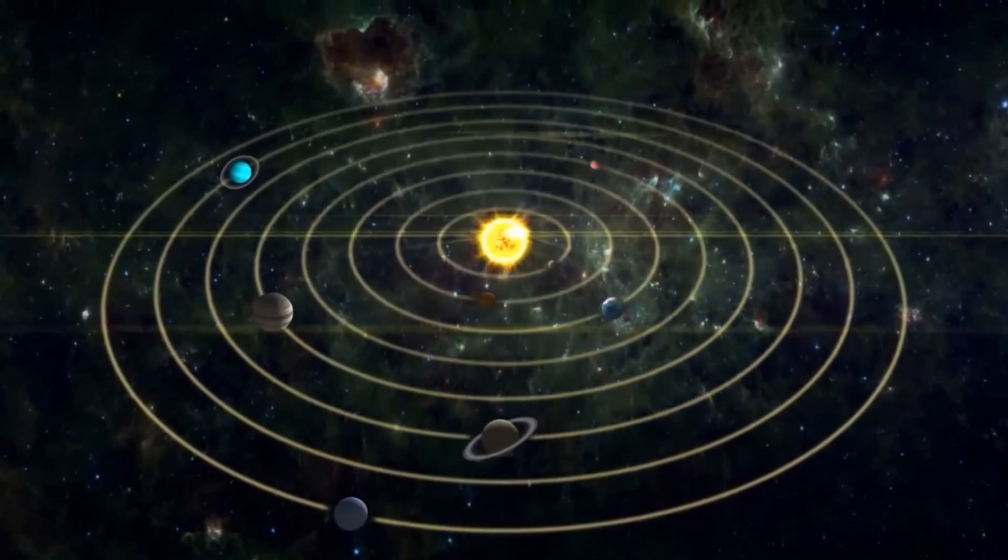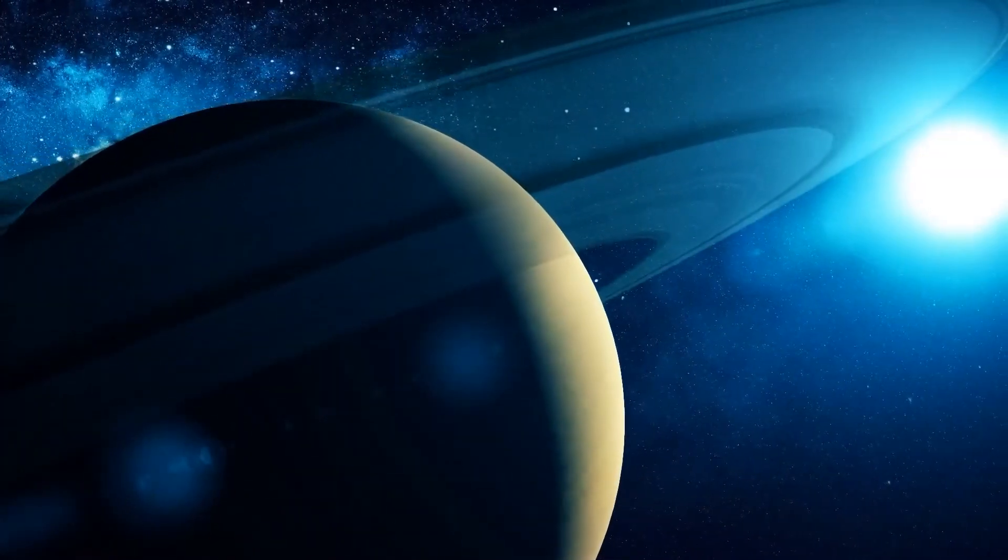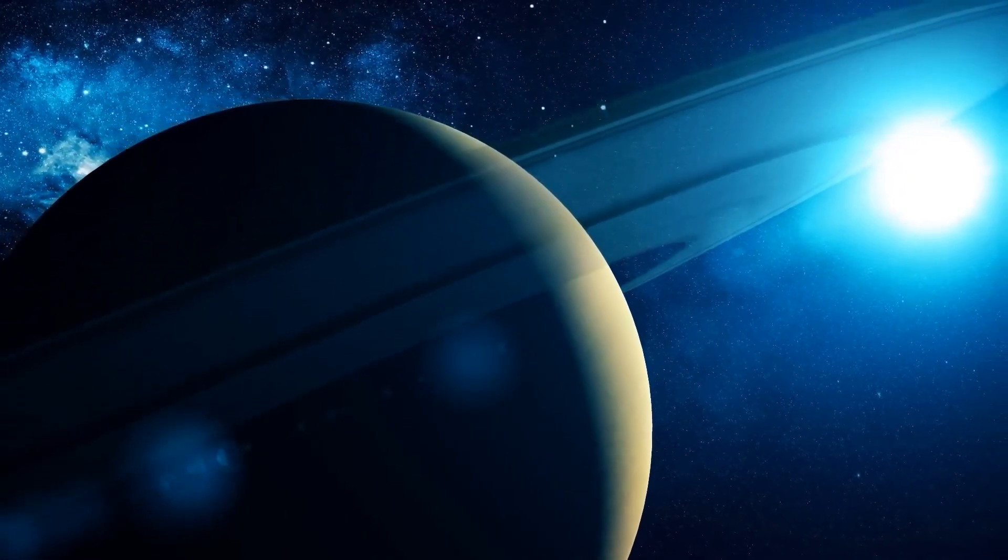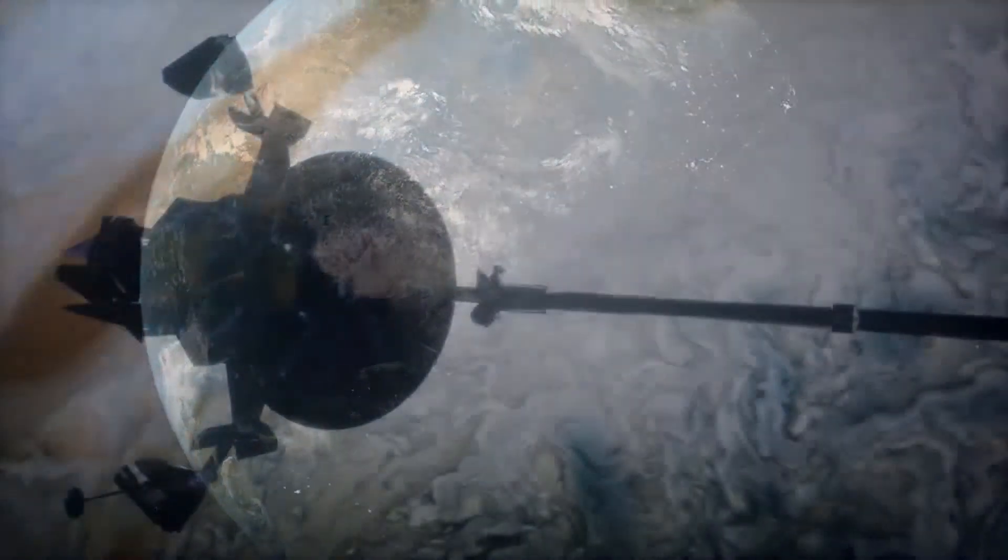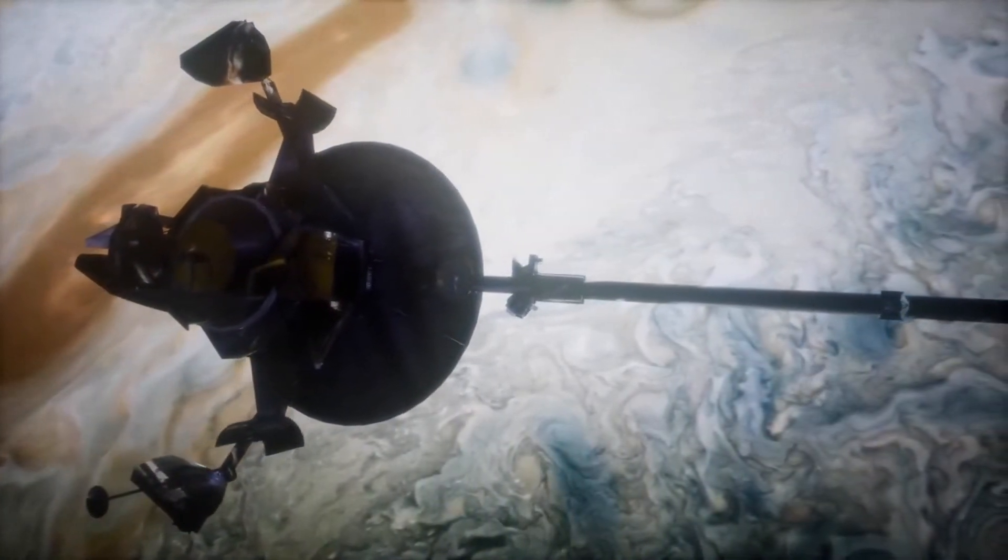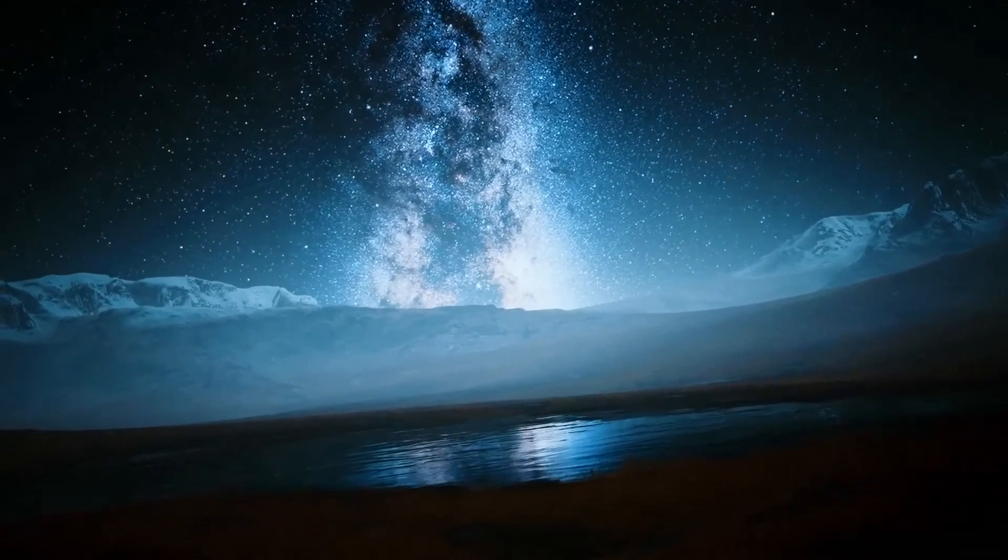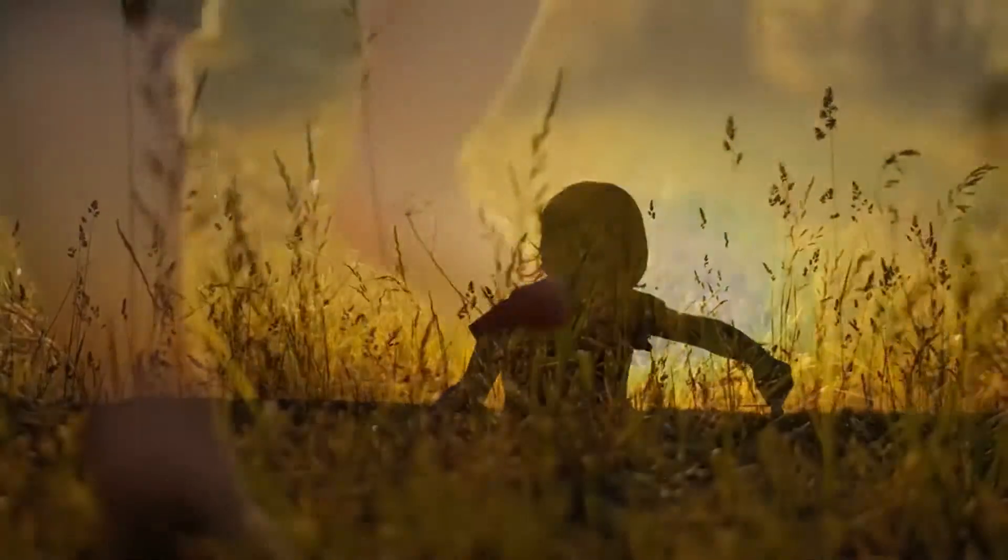Secondly, gravity is responsible for the harmonious orbits that define our cosmic neighborhood. The gravitational pull of the sun keeps our planet and other celestial bodies in the solar system in their places. Thanks to this delicate balance, the Earth maintains an optimal distance from the sun, receiving the necessary amount of energy to support life.